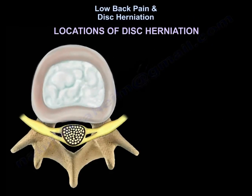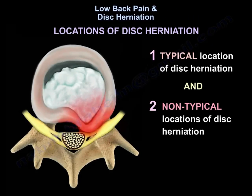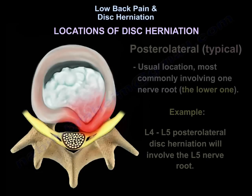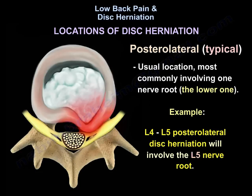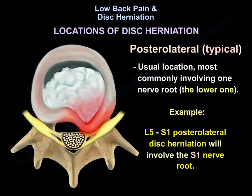There is one typical location of disc herniation and two locations that are not typical. The typical location is posterolateral — the most common location, usually involving one nerve root, the lower one. For example, the L4-L5 posterolateral disc herniation will involve the L5 nerve root, and the L5-S1 posterolateral disc herniation will involve the S1 nerve root.